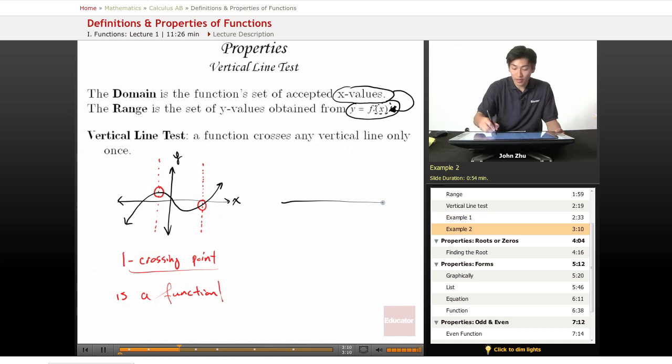Now if we draw another graph, a graph of perhaps an ellipse or elliptical shape, and we try the vertical line test again, well, we see that if we draw in here, we have two crossing points.